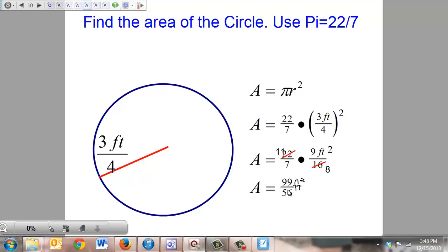Of course, this is an improper fraction. We cannot have an improper fraction for our final answer. So we're going to change that to the mixed number, 1 and 43/56 feet squared. There you go.